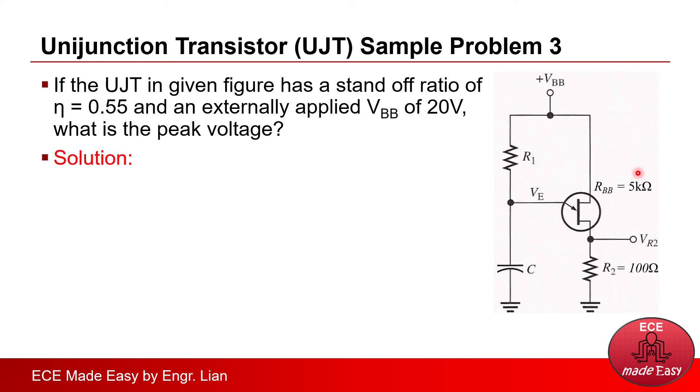So, for the solution recall, a while ago, we have already derived that the formula for Vp is equals to standoff times Vbb plus Vpn. However, if we will check back the circuit here, we could not directly apply the given formula derived a while ago since there is another external resistor, R2, added in series with the UJT.